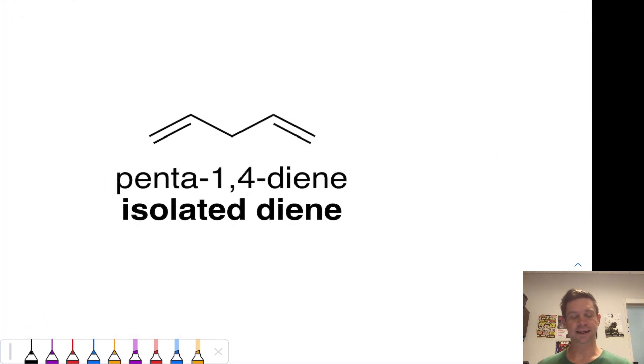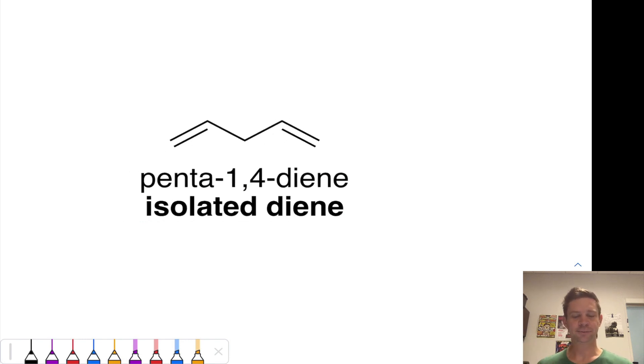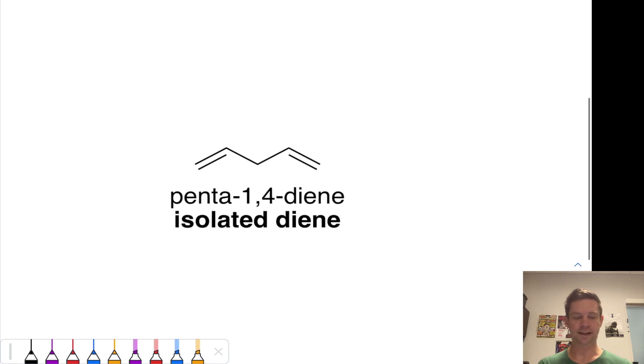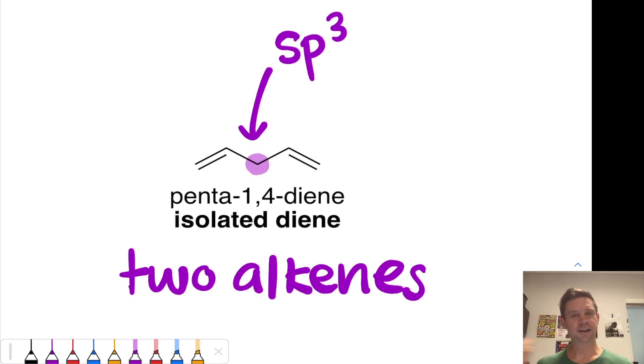An isolated diene is one in which we have two carbon-carbon double bonds that are separated by an sp3 hybridized atom. Notice that in the center of this molecule, there's an sp3 hybridized carbon. This is not a conjugated molecule because of that tetrahedral sp3 hybridized carbon in the center. We can think about this molecule as basically just two alkenes in one molecule. Everything you know about alkenes already applies to this molecule.